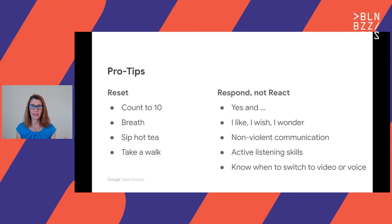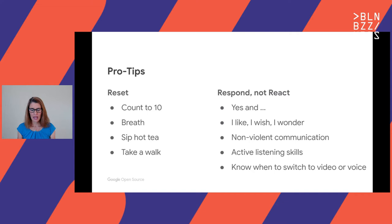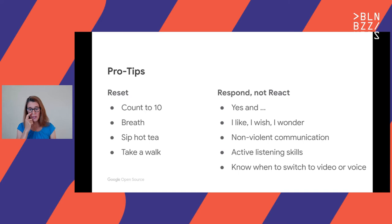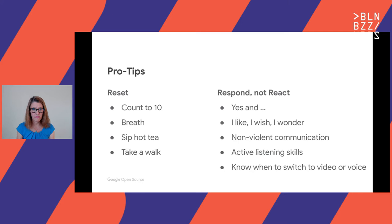I also encourage everyone to look into nonviolent communication strategies — there are ways in which language is helpful and some language is unhelpful, so learn what is helpful. I also strongly encourage using active listening skills: someone says something to you and you repeat back what you heard, to make sure you're all on the same page before taking the conversation to the next step. So, for example: what I'm hearing you say is you would like to achieve this, this, and this — is that correct? Okay, great, now that we're aligned, here's what I recommend. Active listening is a great way to check in before jumping into a bigger conversation.